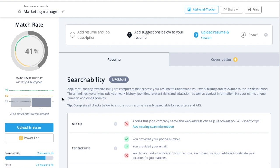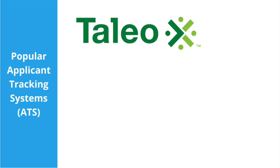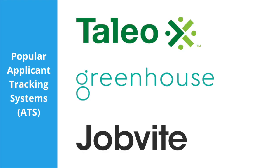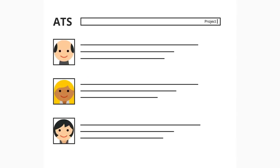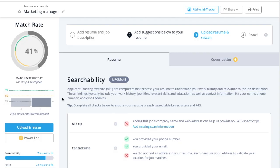Jobscan's algorithm mimics the most common behaviors found in the top applicant tracking systems, or ATS, like Taleo, Greenhouse, Jobvite, and others. These ATS operate basically the same way, but after testing them, we found that they all understand resumes a little differently and have unique tools.